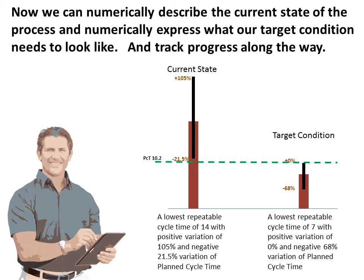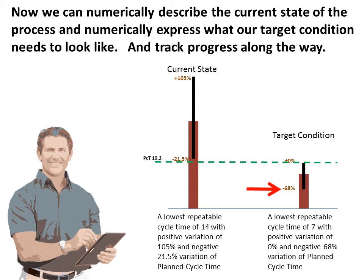Our target condition process would have to have a lowest repeatable cycle time of 7 seconds with a positive variation of 0% and a negative 68% variation of planned cycle time. Visually, we can see the significant improvement that we will have to make in the process. We can also put hard numbers to those efforts.